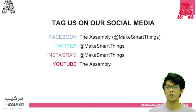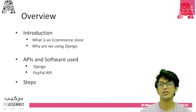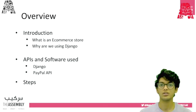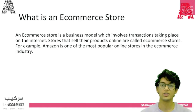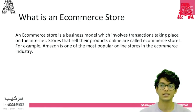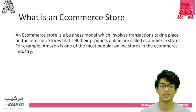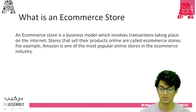Now let me give you an overview of today's workshop. We'll take a look at what an e-commerce store is and why we're using Django as the backend. We'll also talk about the PayPal API and then take a look at the steps required to build our store. An e-commerce store is a business model which involves transactions taking place on the internet. Stores that sell their products online are called e-commerce stores — for example, Amazon is one of the most popular online stores in the e-commerce industry.